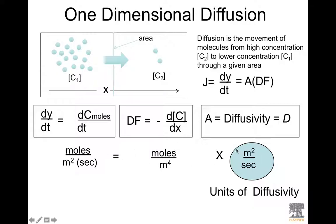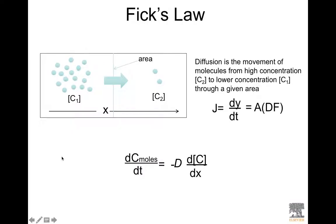So by necessity the diffusivity D has to be meters squared per second which when multiplied by the concentration gradient and the driving force would give you the flux that you want. And of course this leads to Fick's law. So diffusion is the movement of molecules from high concentration to lower concentration through a given area. This may look more familiar for those of you who've taken earlier courses.